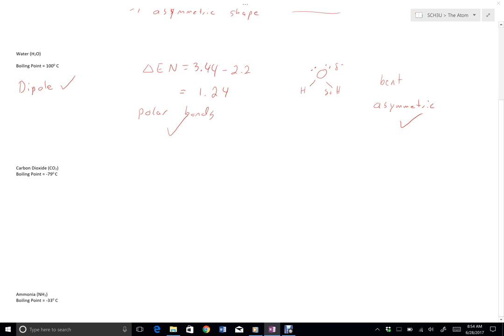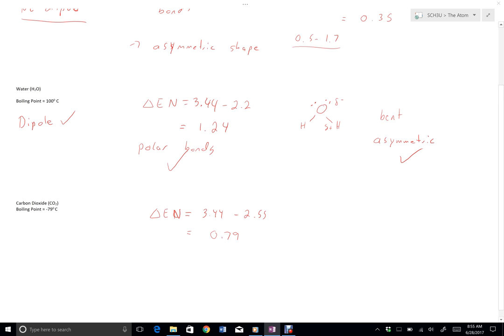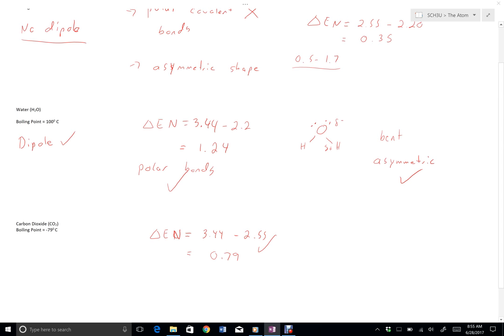Carbon dioxide. So we're going to go through that same again. First, we'll check for polar bonds. Electronegativity difference. Oxygen is 3.44, carbon is 2.55, so my difference here is 9, and then that becomes 3.2, so 0.79.